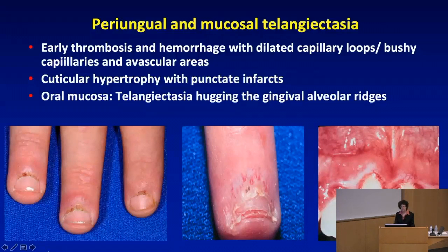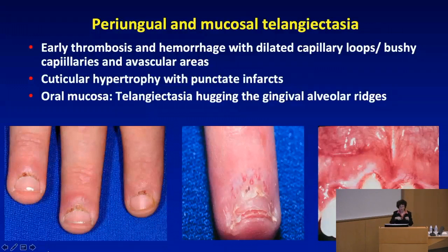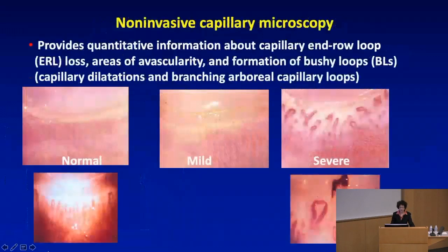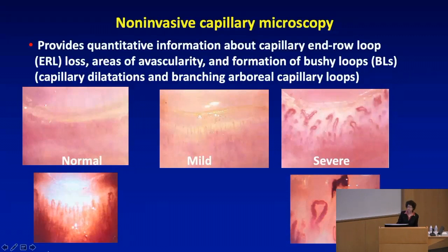I want to emphasize the oral mucosae because this is another area where one can see telangiectasia — sometimes just hugging the alveolar ridges, the gingivae — reminding us of the way they hug the nails with periungual telangiectasia. Capillary microscopy has now become really a gold standard of providing quantitative information about what's happening with the disease course, from normal to severe.